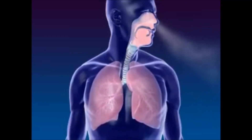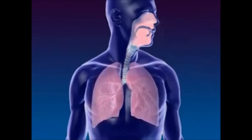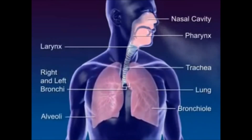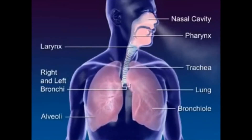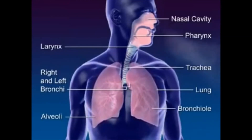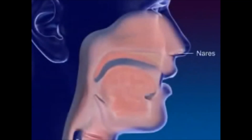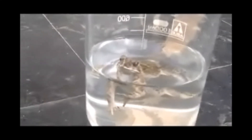Terrestrial animals have no problem in the acquisition of oxygen since it is abundant in the atmosphere. Mammals store it in their lungs by allowing diffusion of oxygen into the lungs. Amphibians use both tracheal respiration and vascularized skin respiration.